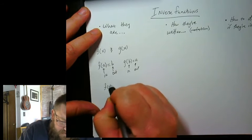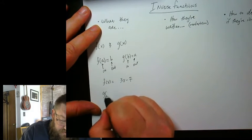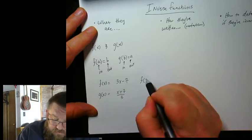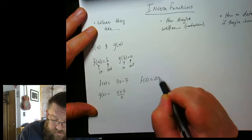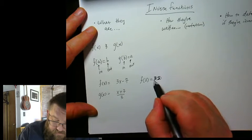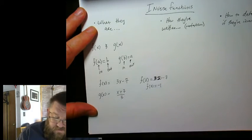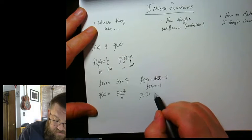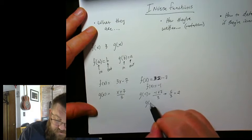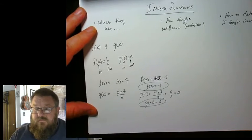Let me give you an example. Let's say we had 3x minus 7, and then let's say we had another function that was x plus 7 divided by 3. It turns out these two are inverse. Let me show you why. Let's pick a number like 2. So if I plug 2 in right here, I get 3 times 2 minus 7. So that would be 6 minus 7, so f of 2 would be equal to negative 1. Now, watch what happens if I put negative 1 into here. I get negative 1 plus 7 over 3. Well, that's 6 over 3, which is 2. So g of negative 1 is 2. You see how they switch? This is the inverse of that. That's the big idea right there.